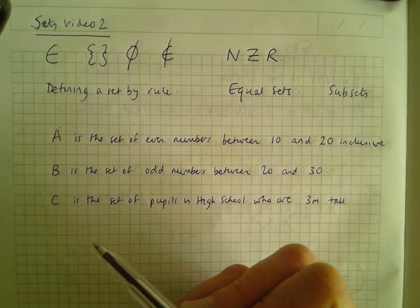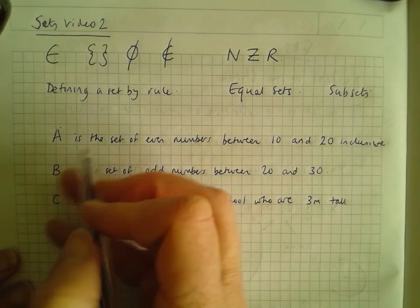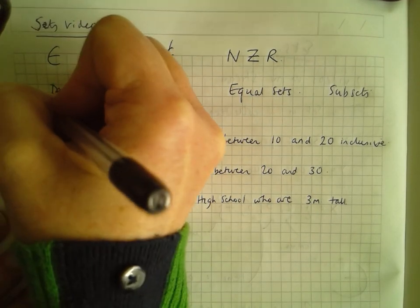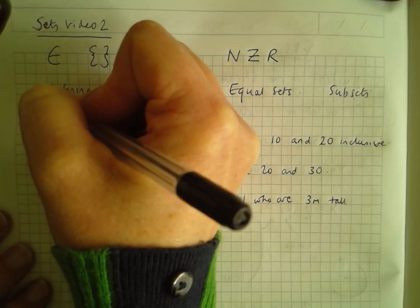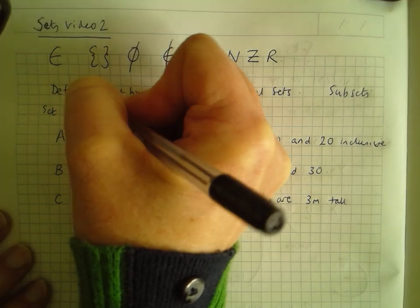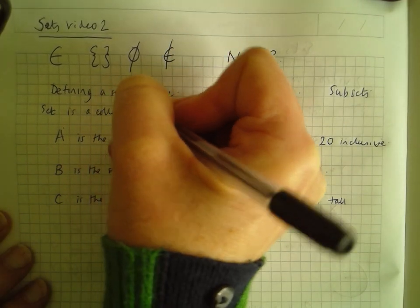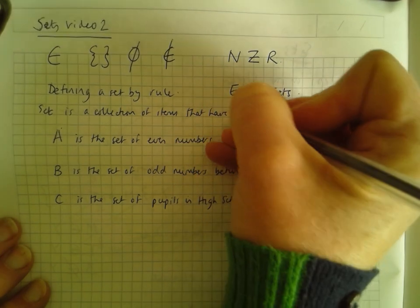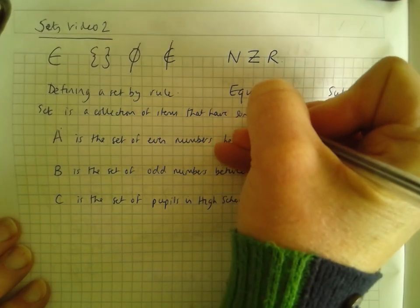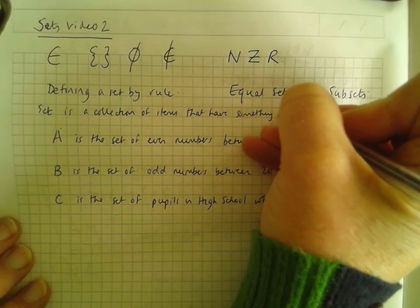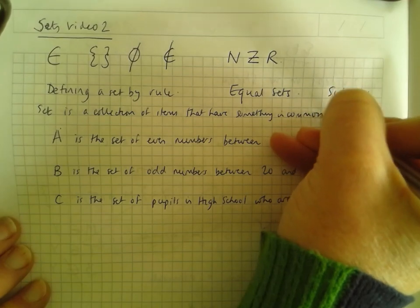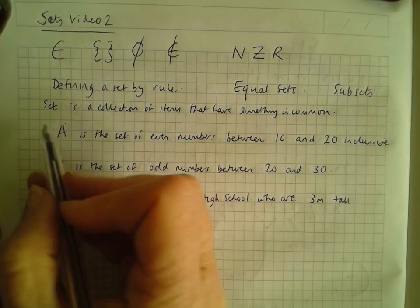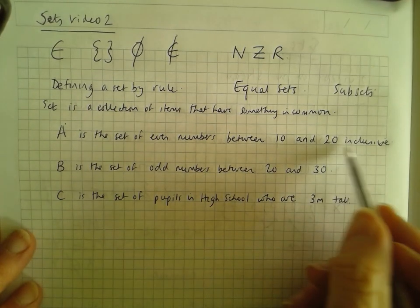A set is a collection of items that have something in common, that are similar. For instance, A is the set of even numbers between 10 and 20 inclusive.